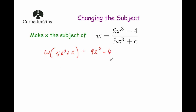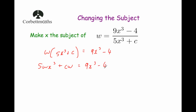Now we want to get the x's over to one side, so we're going to need to expand this bracket. That will give us 5wx cubed plus cw, just multiplying both of those terms by w. And that equals 9x cubed subtract 4.